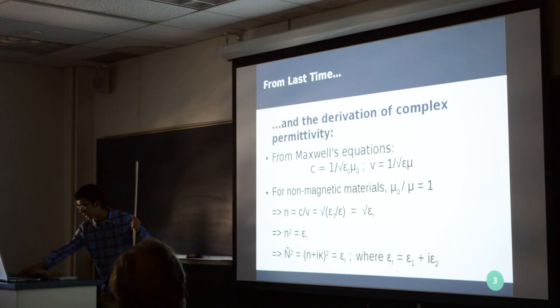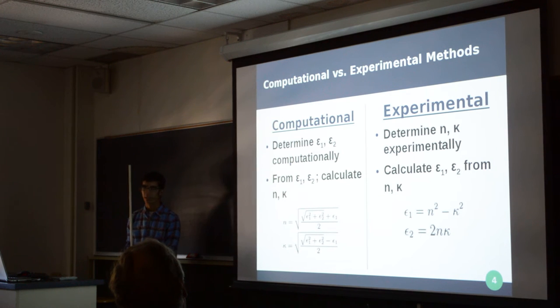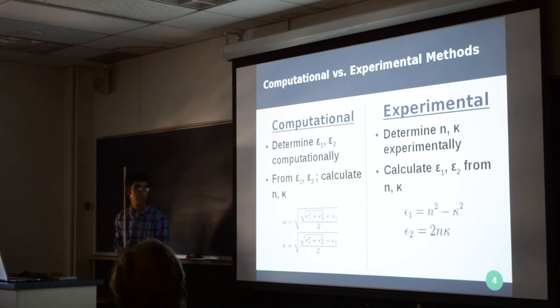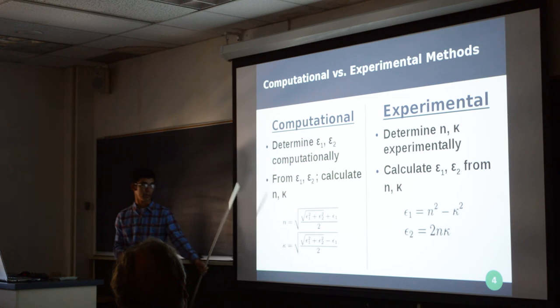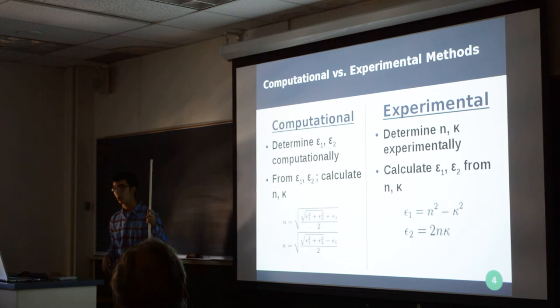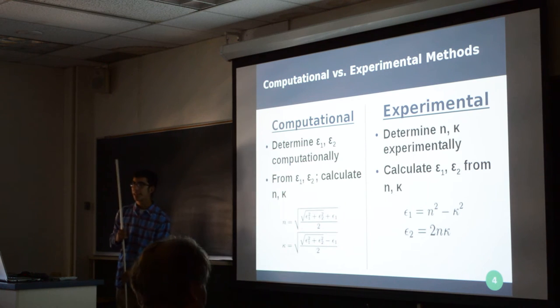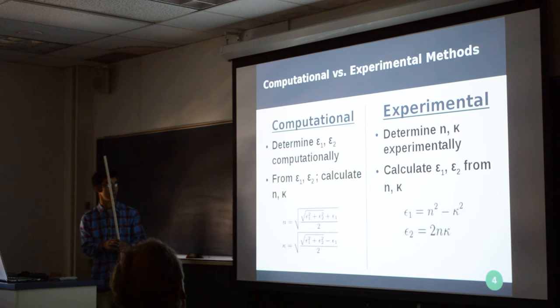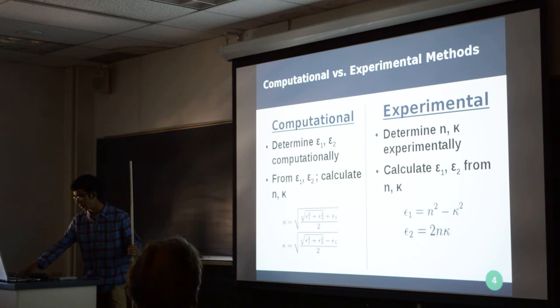Now, just to clarify real quick, my methods involve calculating epsilon one, epsilon two directly through computational methods, and then from there, calculating n and kappa through these algebraic relations. And you can also calculate other optical coefficients from there as well. While the experimental methods, they determine n and kappa through methods such as ellipsometry, and then they can calculate epsilon one and epsilon two from there. Now, that's basically how we can check our results between theory and experiment.